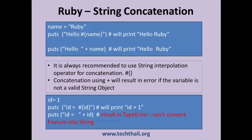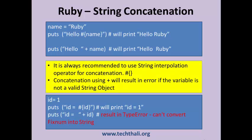The following example demonstrates how to concatenate a string using the interpolation operator and using plus. It is always recommended to use the string interpolation operator for string concatenation. String concatenation using the plus symbol will result in a type error if the variable is not a valid string object.